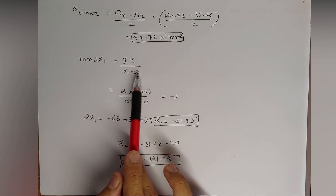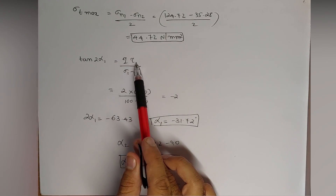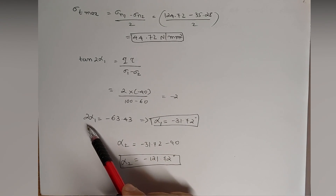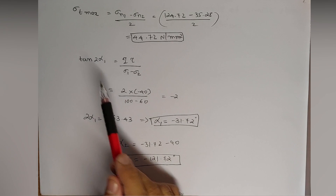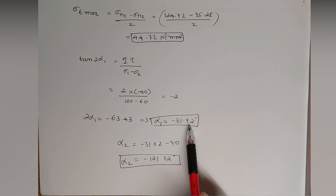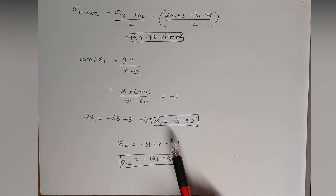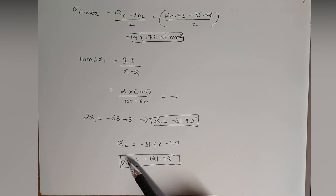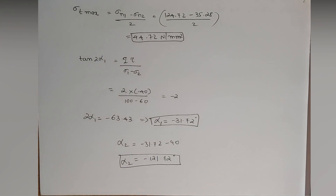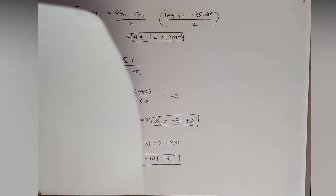Solving for alpha 1: 2τ = 2 × (−40) = −80; σ1 − σ2 = 100 − 60 = 40. So 2α1 = tan⁻¹(−80/40) = tan⁻¹(−2), giving alpha 1 = −31.72 degrees (use a scientific calculator to verify). Then alpha 2 = alpha 1 − 90 = −121.72 degrees. All required values — alpha 1, alpha 2, sigma t max, sigma n1, and sigma n2 — have now been found.